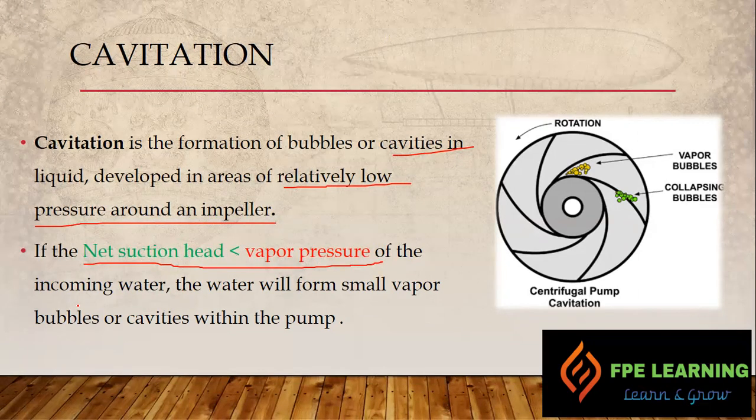To summarize net positive suction head — NPSH — it refers to how much head we are getting at the suction side. It is positive, meaning we are getting positive pressure. If that pressure falls below the requirement recommended by the pump manufacturer, we are going to get vapor pressure issues and cavitation.